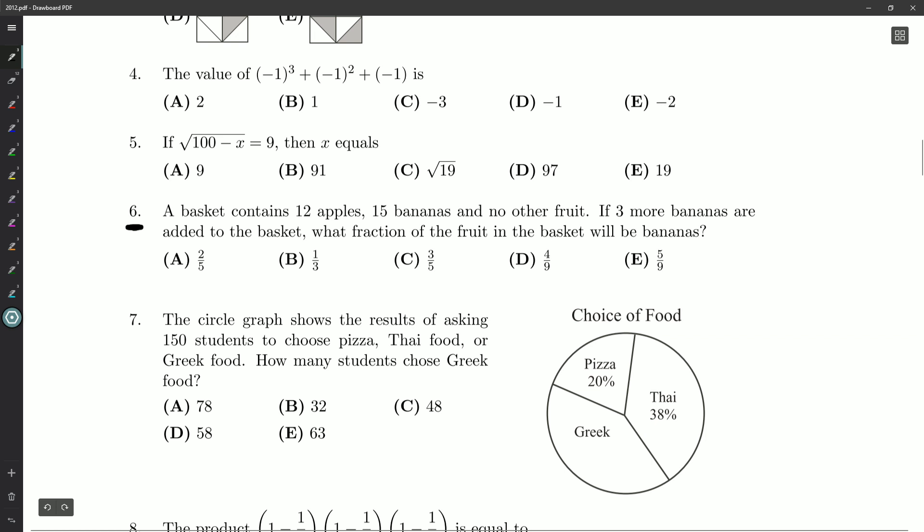A basket contains 12 apples, 15 bananas, and no other fruit. If three more bananas are added to the basket, what fraction of the fruit is bananas now?